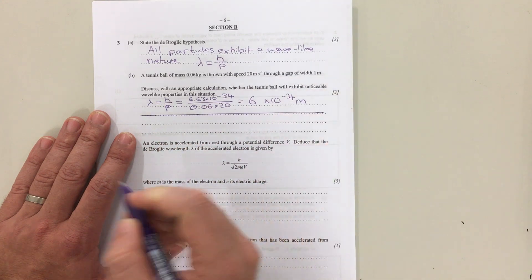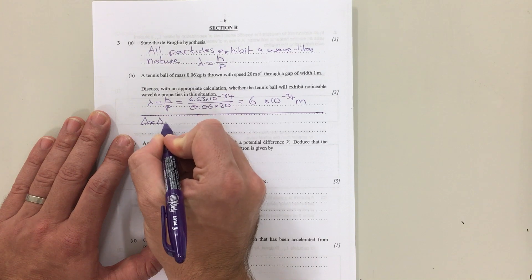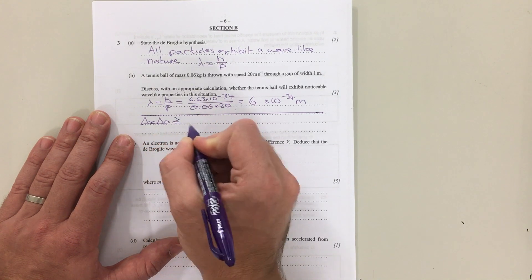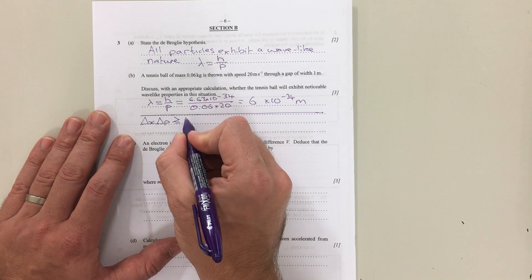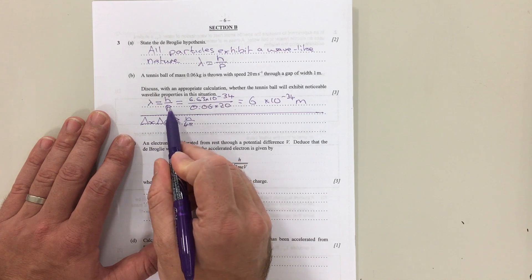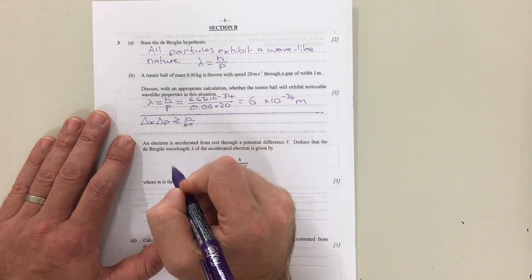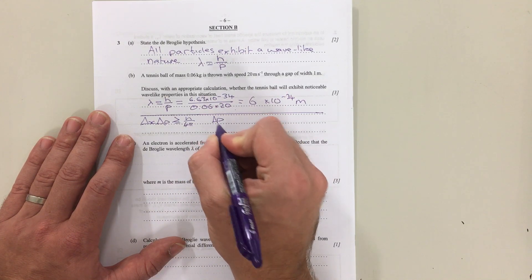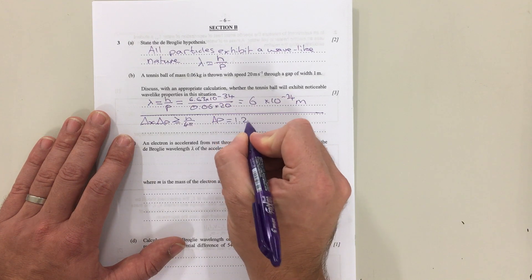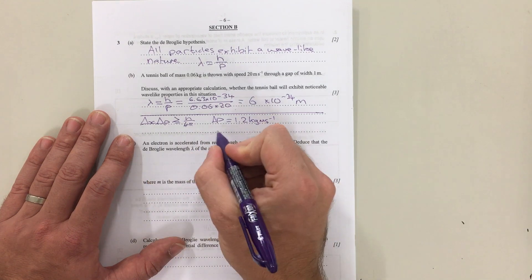The second way is using the uncertainty principle. You can say that ΔX times ΔP is greater than or equal to h/4π. Your uncertainty in momentum, you could take from being your actual momentum, so you've got 0.06 × 20. So the momentum or your ΔP gives you 1.2 kilogram meters per second.